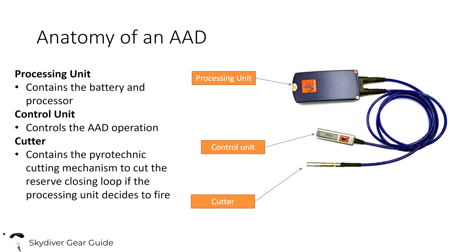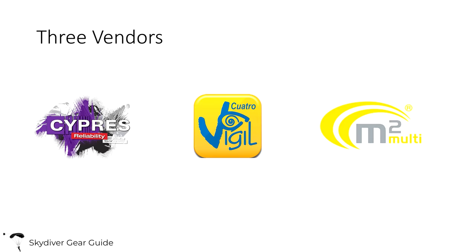Let's talk about the anatomy of an AAD. The three primary components of any AAD, regardless of manufacturer, are the control unit, the processing unit, and the cutter. The control unit is how you interact with the AAD — turn it on, turn it off, look at warning or informational messages, logs, and statistics. The processing unit is where the barometric sensor is, determining how fast you're falling and your altitude. The cutter is what actually cuts the reserve closing loop in case the AAD activates.